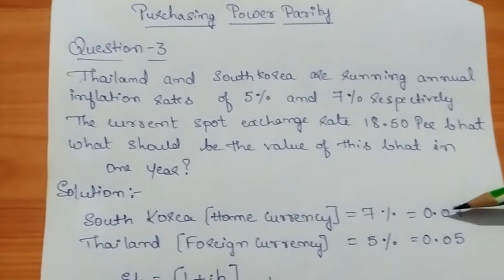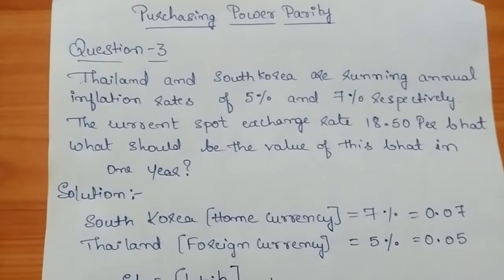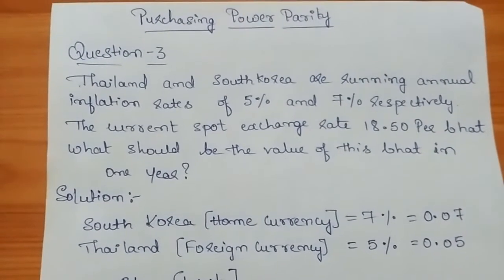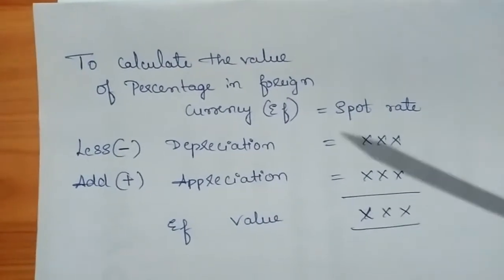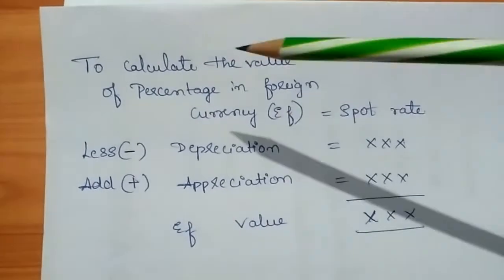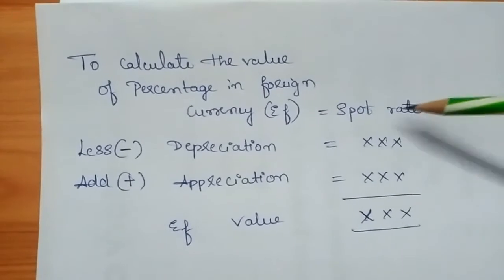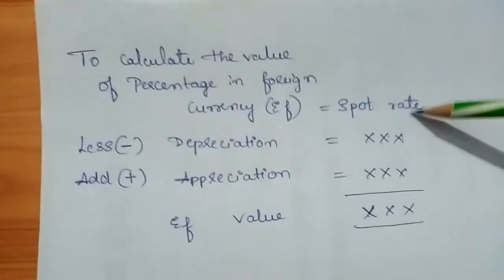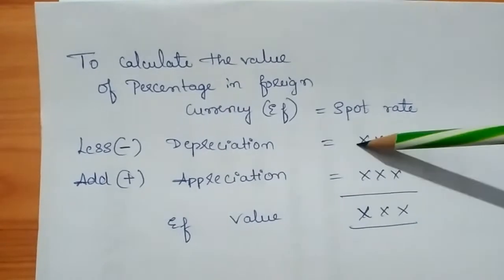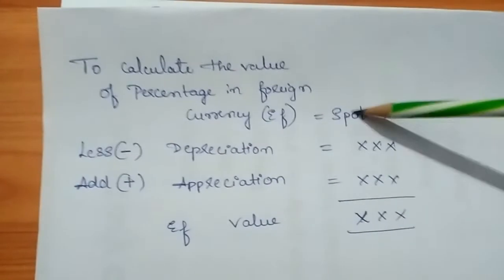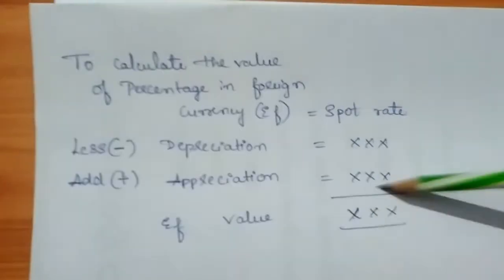Before solving, let's note an important rule. To calculate the future value of a foreign currency, take the spot rate of that foreign currency. If you get depreciation, deduct it from the spot rate. If you get appreciation, add it to the spot rate to get the future value of that foreign currency.